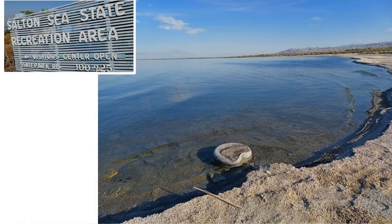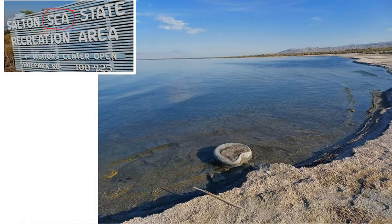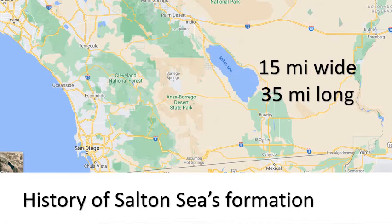There is a very unique body of water near Palm Springs called the Salton Sea. When you read the word sea, you think of the ocean — salty water. This lake is a saltwater lake, actually saltier than the water in the ocean. It is the largest lake in California — 15 miles across and 35 miles long — and the lake formed by accident.